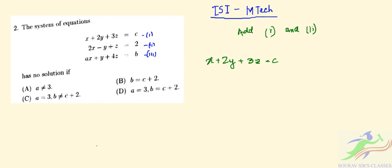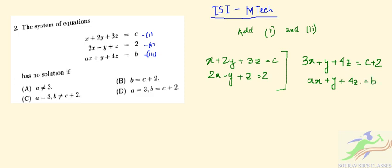Then we have 2x minus y plus z equals 2. If we add these two equations, we get 3x plus y plus 4z equals c plus 2. Another equation is already given: ax plus y plus 4z equals b.